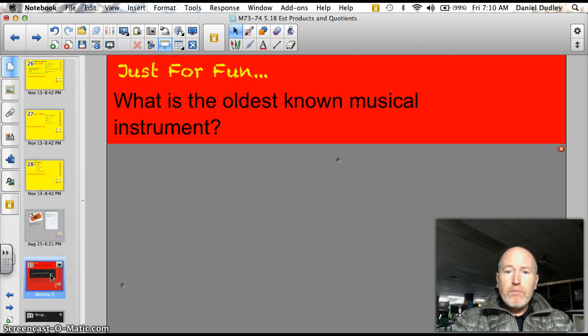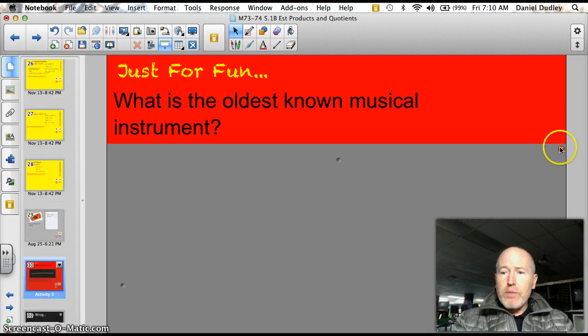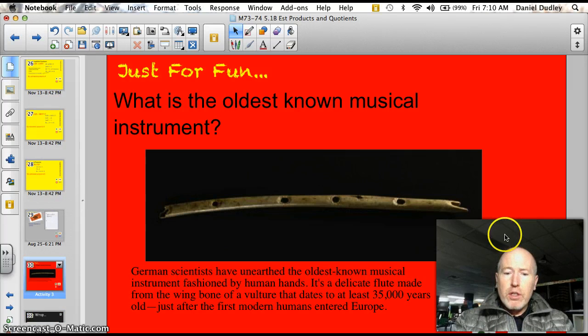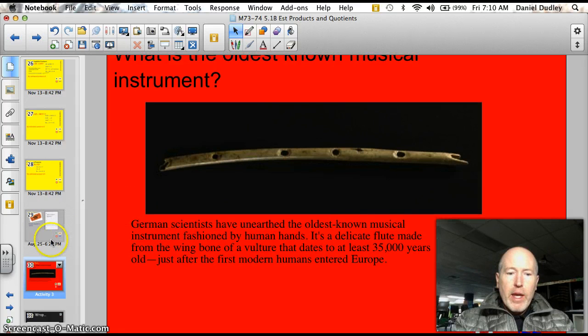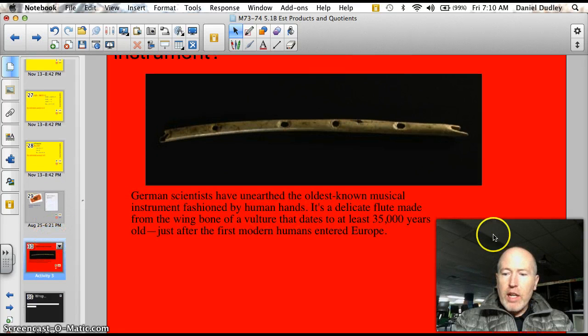The answer to the trivia question. What is the oldest known musical instrument? Die Flute. German scientists unearthed the oldest known musical instrument fashioned by human hands. A flute. About 35,000 years old. Wow. Just after modern humans entered Europe. That's a little piece of trivia for you band kids. Have a good night. Thanks for listening.